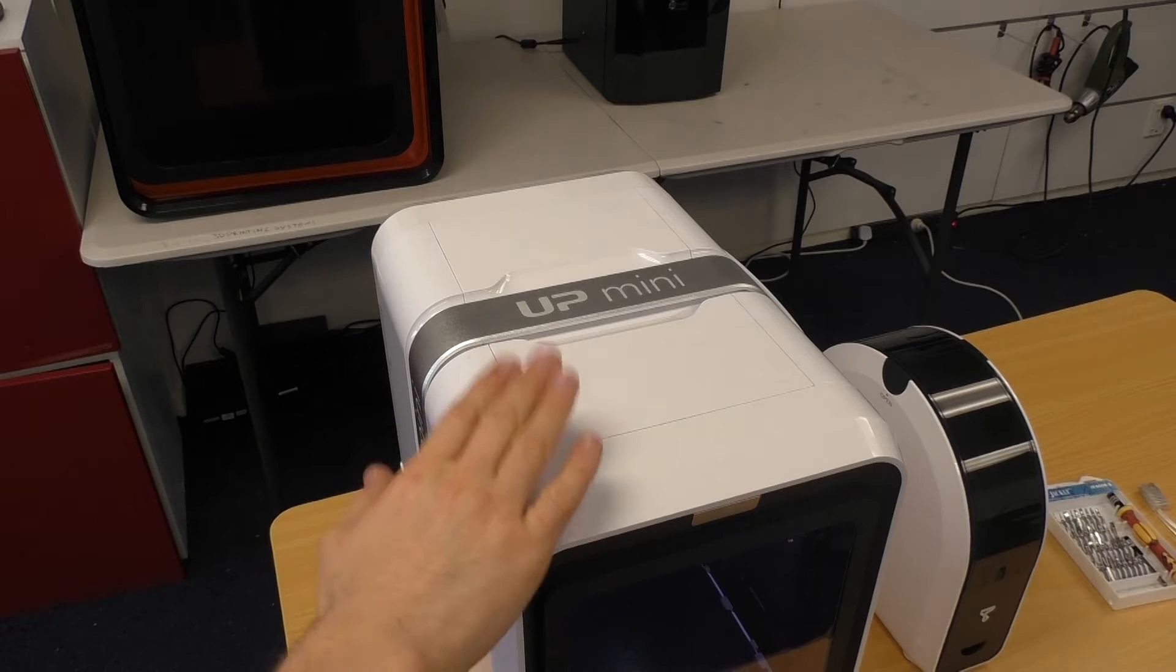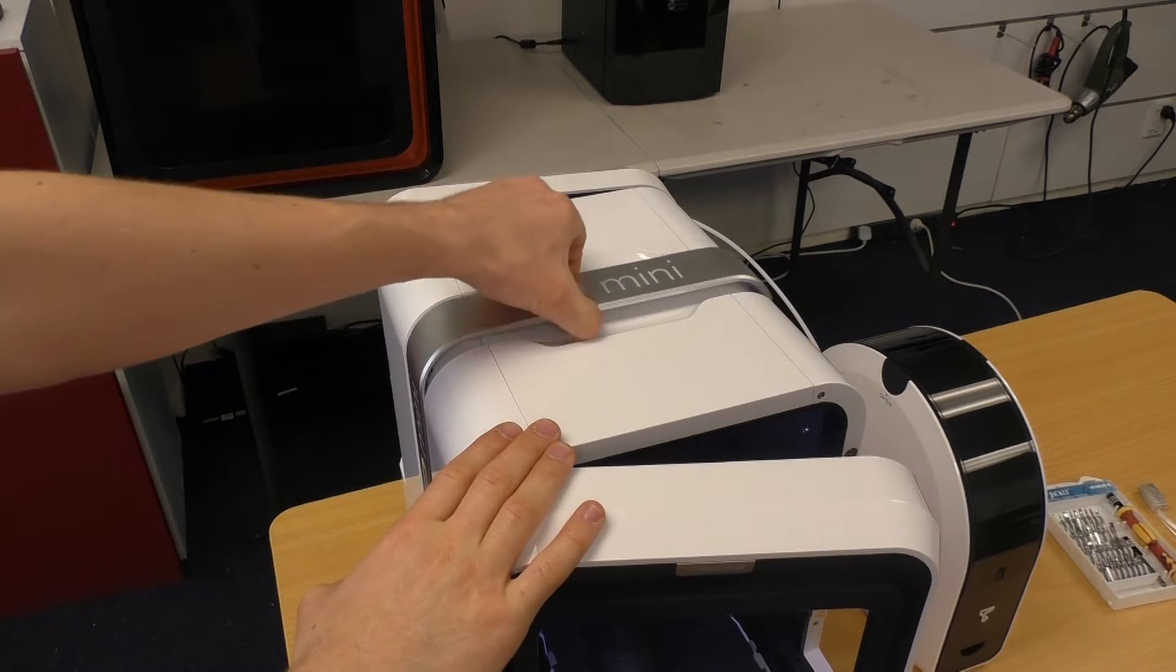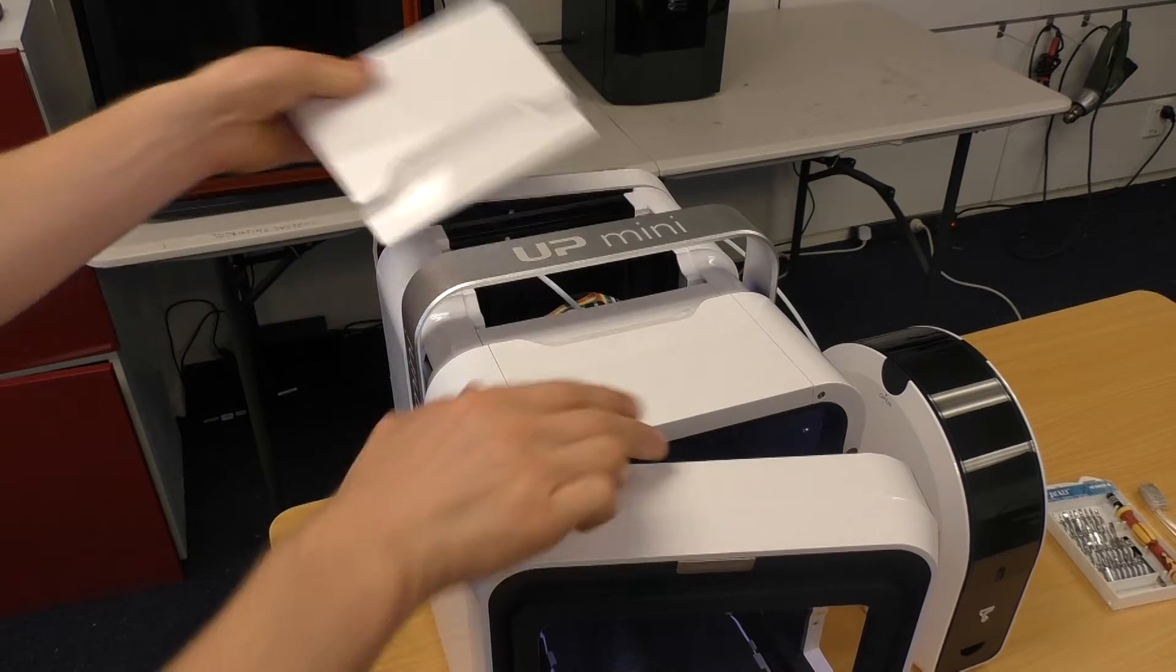While the printhead is heating up we'll take off the two lid covers. Open the front door, open the rear door, raise the handle and then lift each cover away.